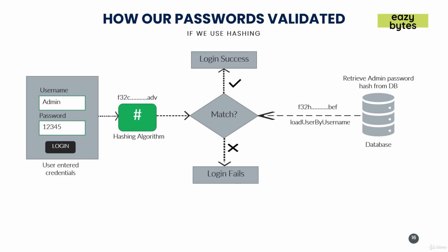This is the sample representation of how Spring Security will behave if you try to use hashing. The very first action performed by the user, as soon as he enters his credentials and clicks login, is to convert that password — for example, '12345' — using a hashing algorithm, either on the UI side or in the backend, based upon your requirement. Once that original password is hashed, it will be converted into some encrypted-looking value.